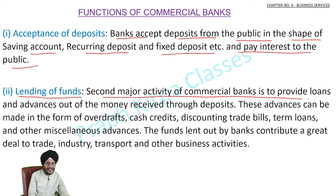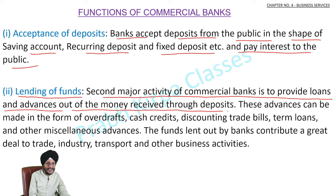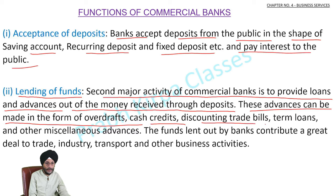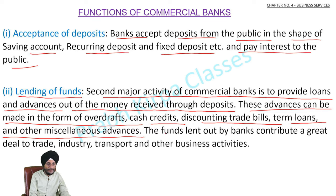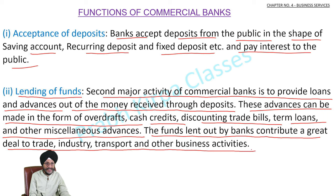The second major activity of commercial banks is to provide loans and advances out of the money received through deposits. These advances can be made in the form of overdrafts, cash credit, discounting trade bills, term loans and other miscellaneous advances. The funds lent out by banks contribute a great deal to trade, industry, transport and other business activities.